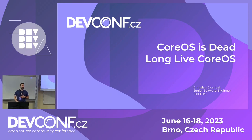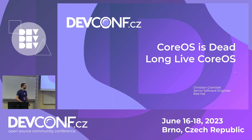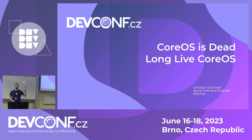My name is Christian Glombeck. I'm a senior software engineer in OpenShift at Red Hat. I am on the OKD streams team, and we maintain the OKD community releases, which is the community version of OpenShift. I actually started my journey into software engineering with almost CoreOS — with one of the predecessors to CoreOS, which was Atomic Host.